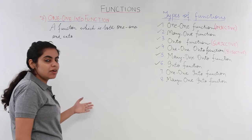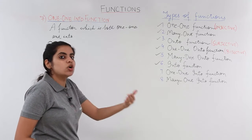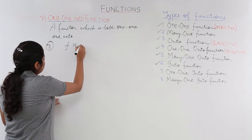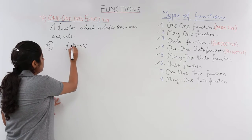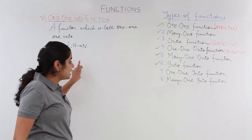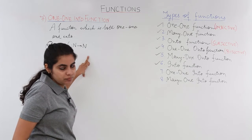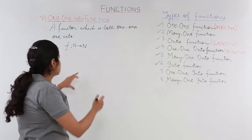Suppose I have a function mapping from natural numbers to natural numbers. So the domain is N and the codomain is also N, and the function is as follows: